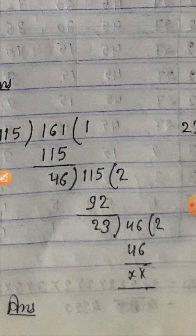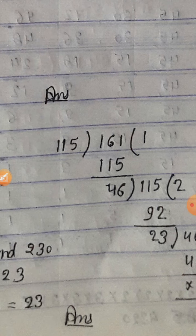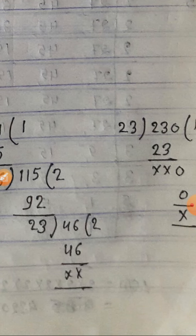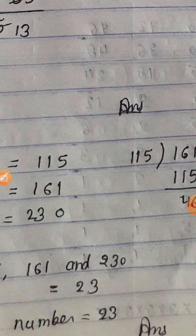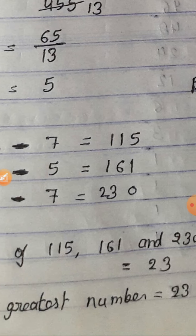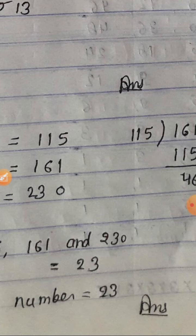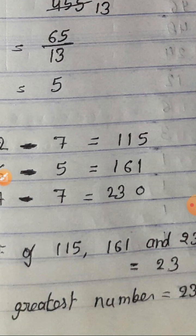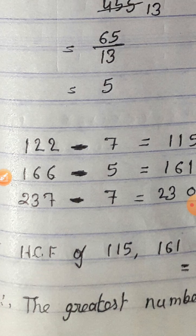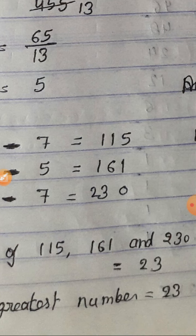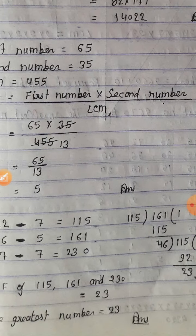जब 115, 161, 230 का HCF find करते हैं तो answer आता है 23. The greatest number is 23 — यानि 23 वह greatest number है जब divide करते हैं तो remainder 7 होता है।